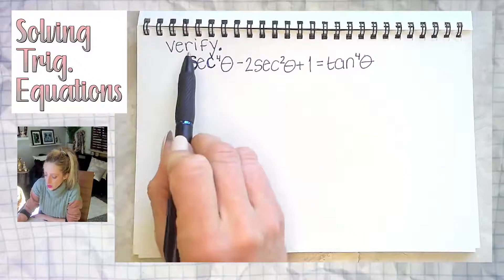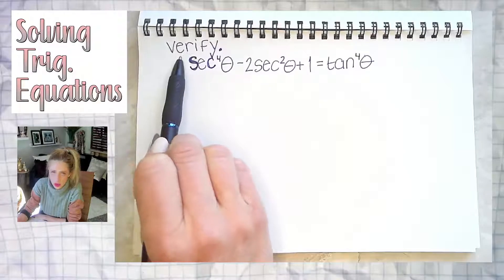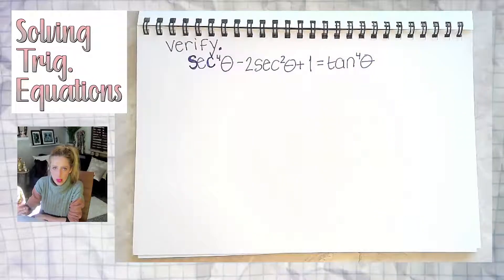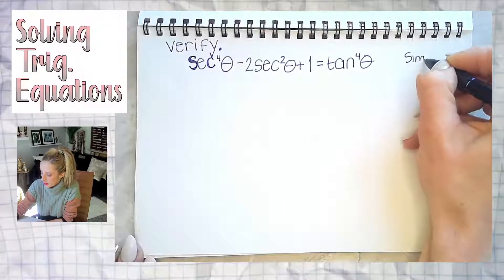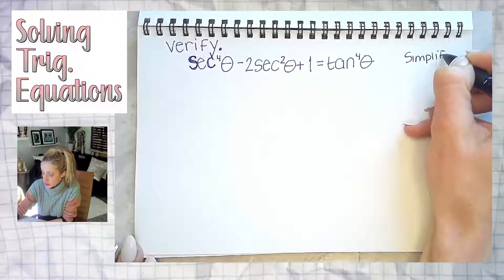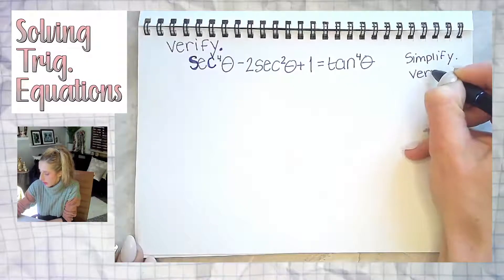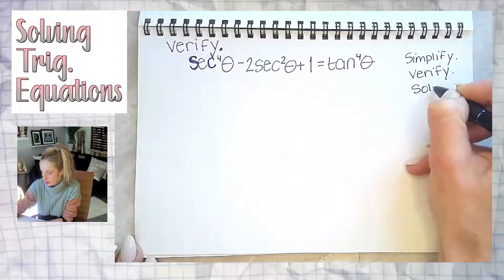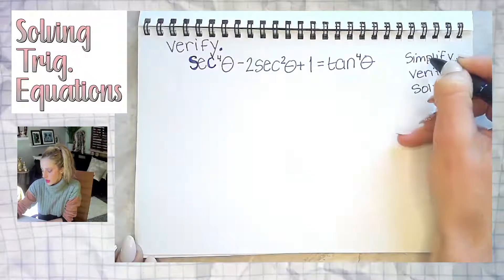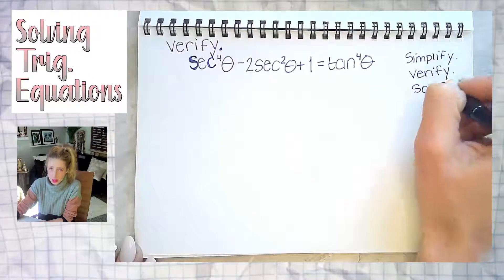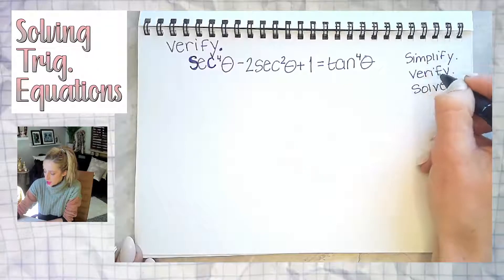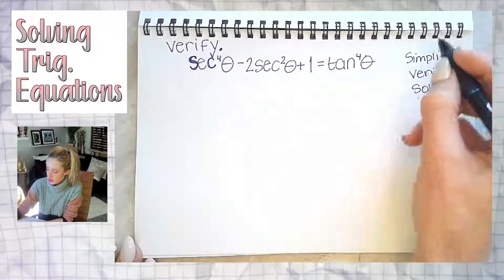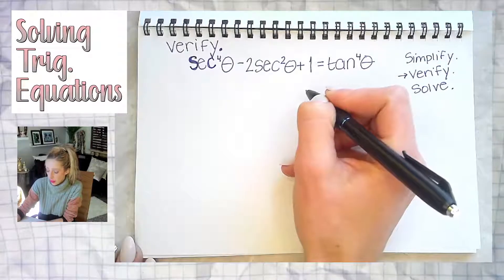This first example is verifying. You have to read directions and know the difference. We just spoke about how there's going to be a lot of back and forth — your directions will tell you to simplify, verify, or solve. Those are your directions. They all could look very similar, almost identical, however each set of directions means you have to do something different. So this right here is an example where we verify.